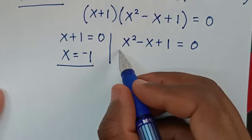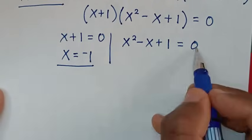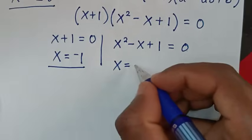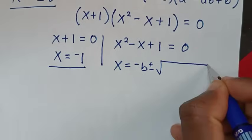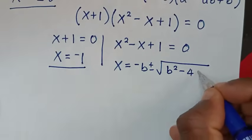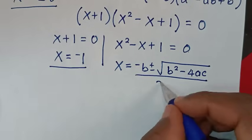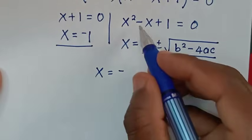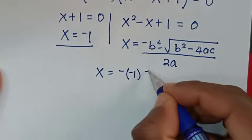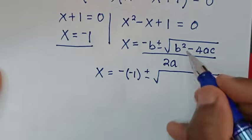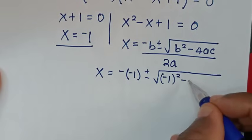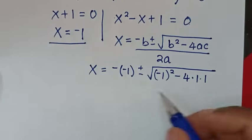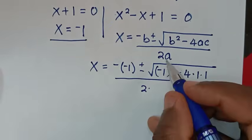Then to solve from this quadratic equation to find the values of x, we will apply the quadratic formula. The formula is x is equal to negative b plus or minus square root of b squared minus 4ac over 2a. Then it will be x is equal to negative b, here b is negative 1, so bracket negative 1, plus or minus square root of b squared which is negative 1 bracket squared, then minus 4 times a which is 1, times c which is 1, then over 2 times a which is 1.